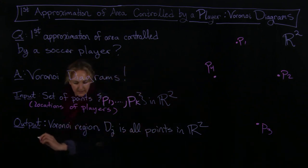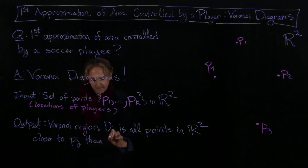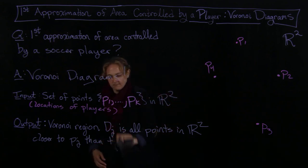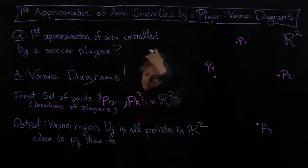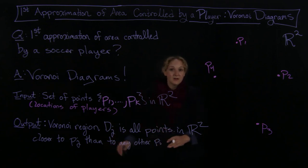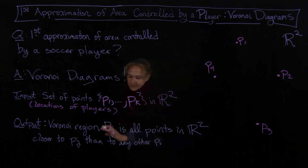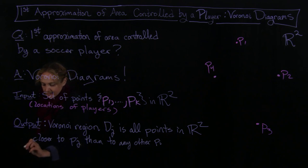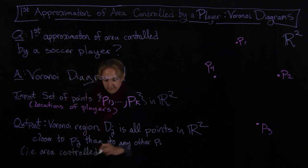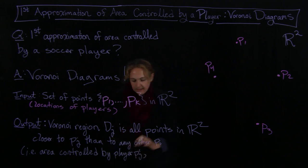In R2, closer to Pj than to any other Pi — any other player. So we're looking at all points on the field that are closer to player Pj than to any other player Pi. This is just an index meaning we're talking about any of them. And so the area controlled by player Pj is the area controlled by that player, disregarding speed and orientation.